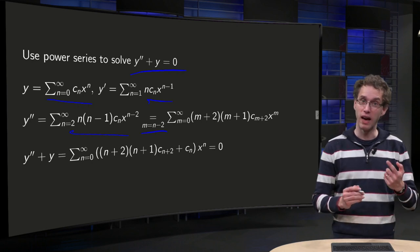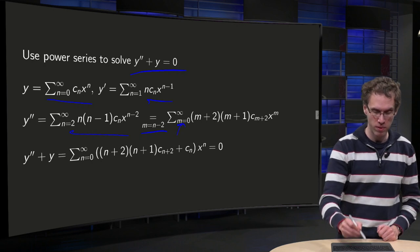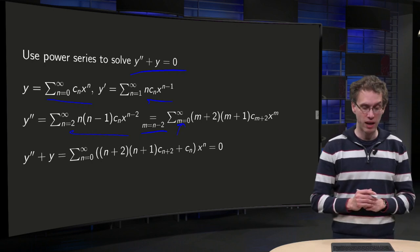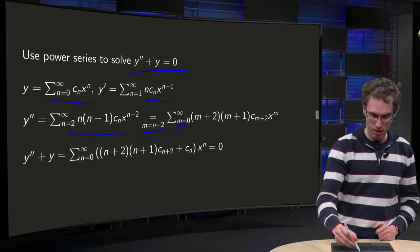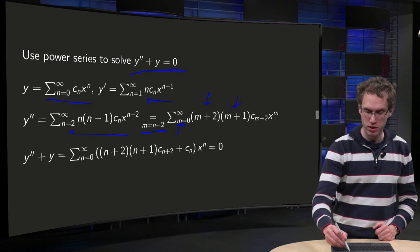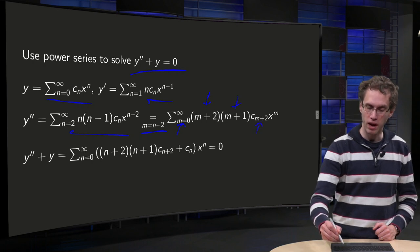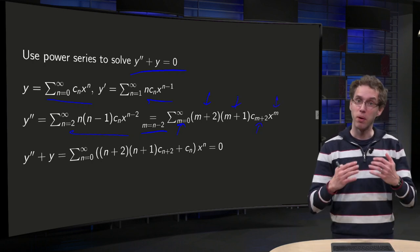If n starts at 2, m starts at 0, and n equals m plus 2, so we get n plus 2 and n plus 1 times c_{n+2}, and now we have x to the power m.